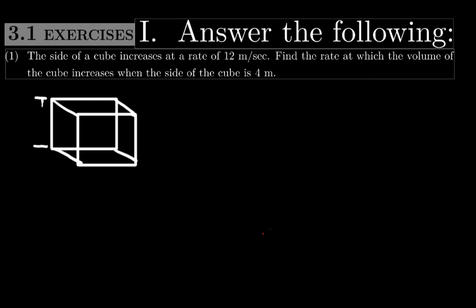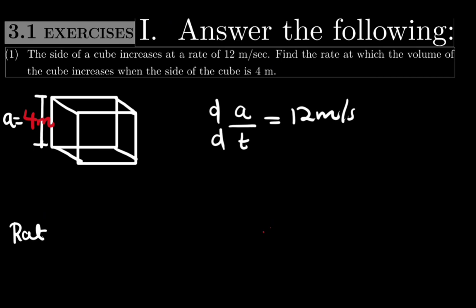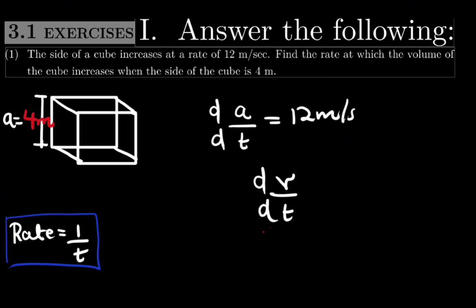We have a cube with a side of 4 meters. We will call this side A. The rate of the side of the cube increases by 12 meters per second. Whenever they say 'the rate,' you divide by time. When they say the rate of the volume, it means dV over dt. The question wants dV over dt.